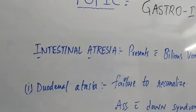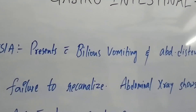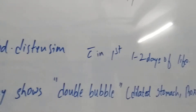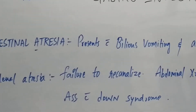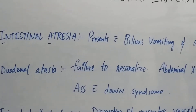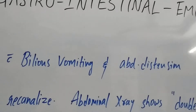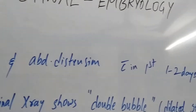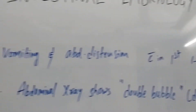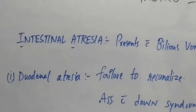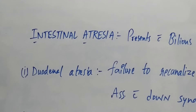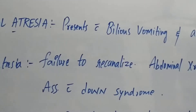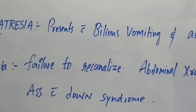What is intestinal atresia? It presents with bilious vomiting and abdominal distension within the first one to two days of life.